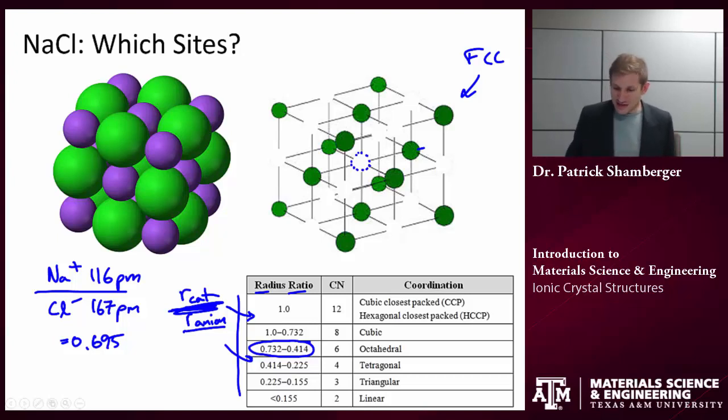What that means is that cation sodium is a little bit bigger than the size of the octahedral hole, but it's a little bit smaller than the next available site. The next one would be a cubic available site and the size of that available site is 0.732 times the radius of the anion.